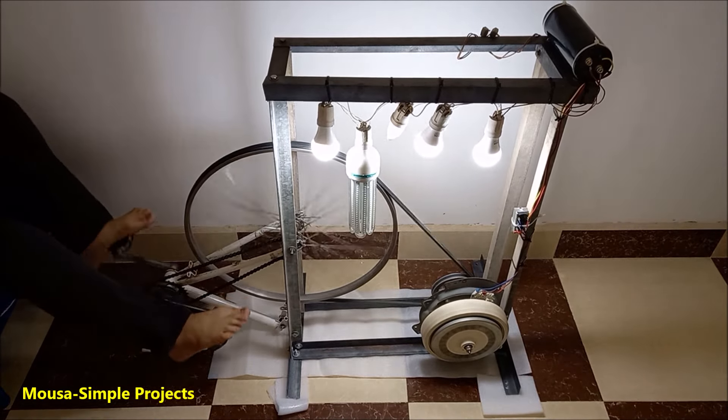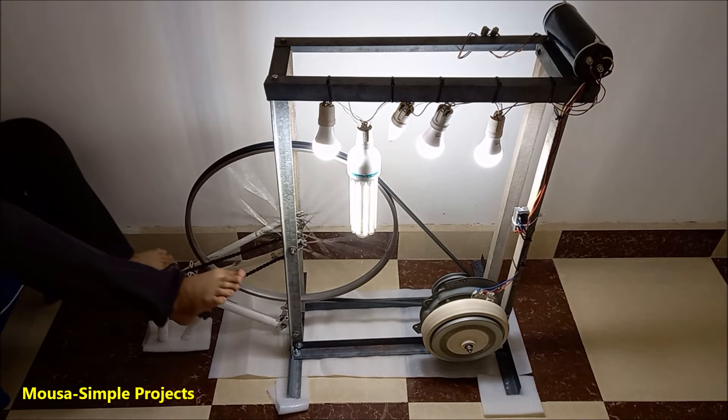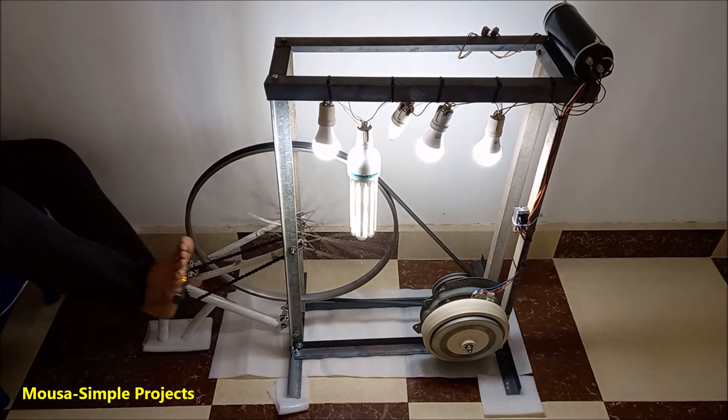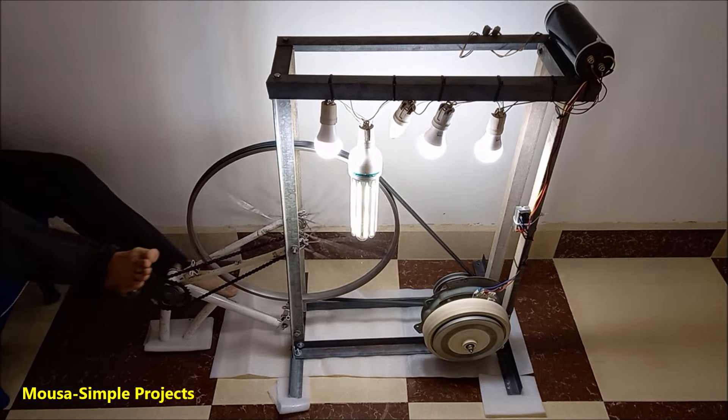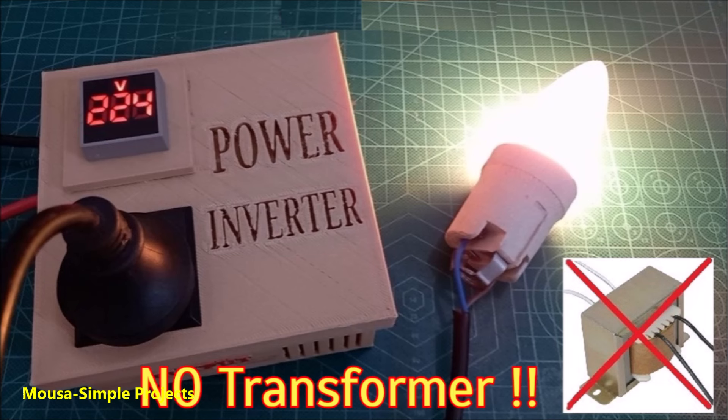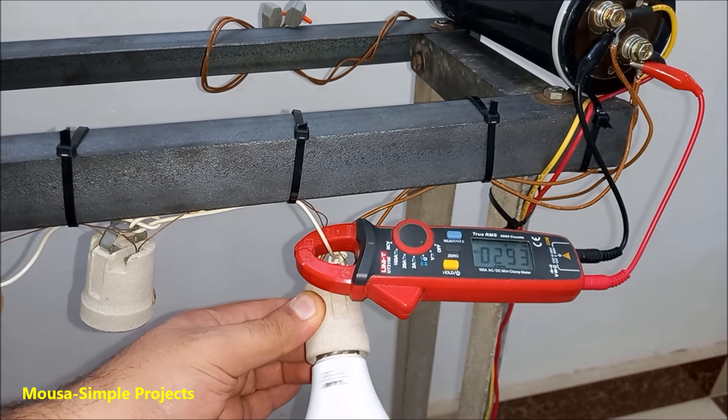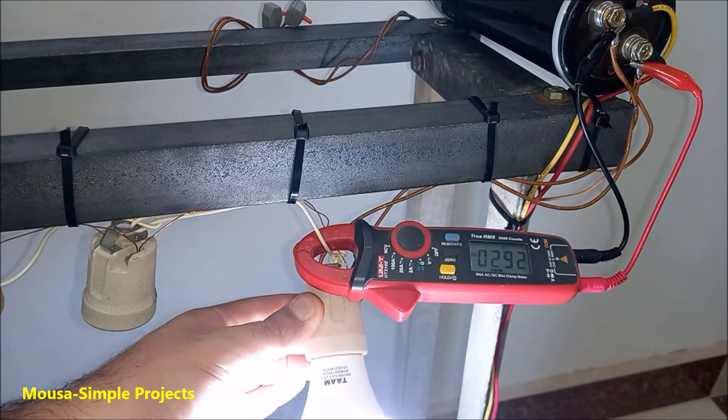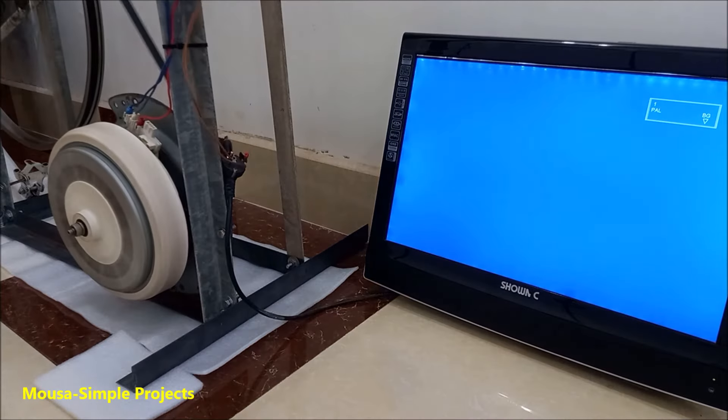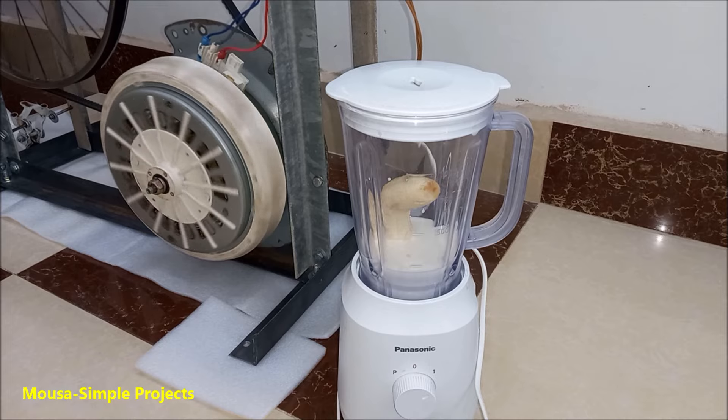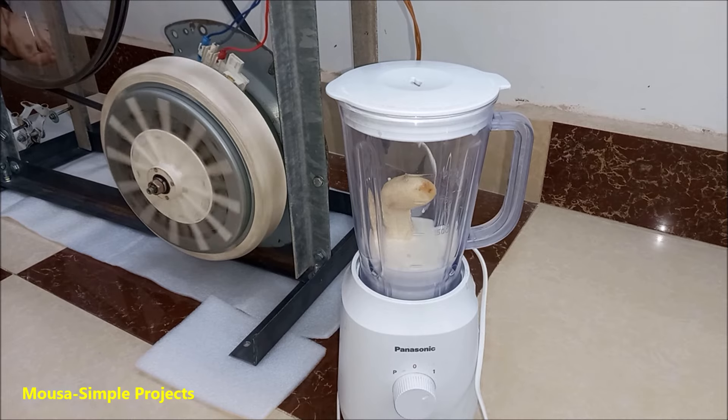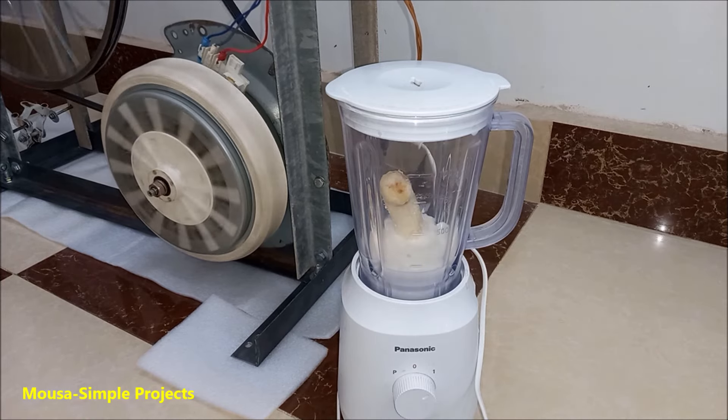So the output voltage of this generator is high DC voltage. However, you can convert it to AC by using a transformerless inverter. But for most appliances it's okay to use DC voltage such as lamps, TV, and even the blender. The blender has a universal motor which works with both AC and DC voltage.